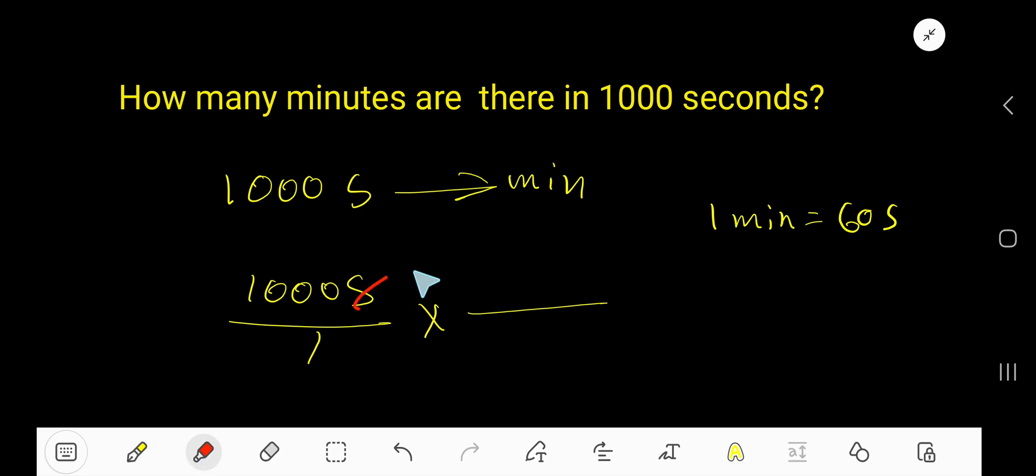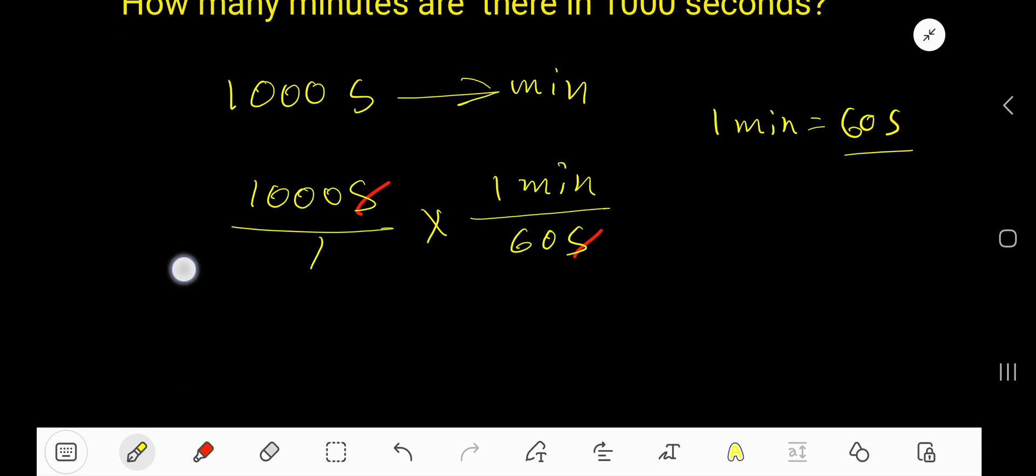We'd like to cancel this second. So the second part of this conversion equation will be the denominator so that we can cancel second to second. The minute part of this equation will be the numerator.